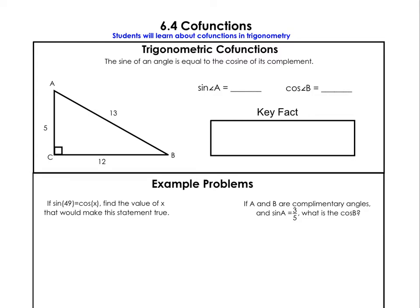Bring your attention over here to where it says trigonometric co-functions. Trigonometric co-functions — this is our definition: the sine of an angle is equal to the cosine of its complement. That made no sense to you. Let's break it down.